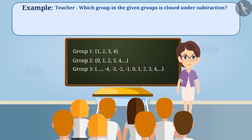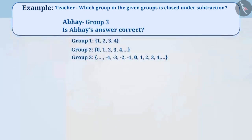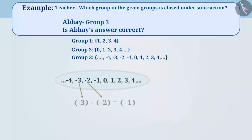Abhay answered that group 3 is the right answer. Is Abhay's answer correct? A group is closed under an operation when the result obtained from the operation is always part of the same group.